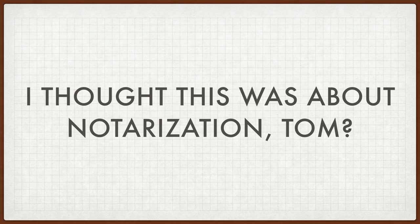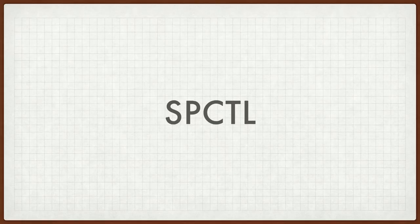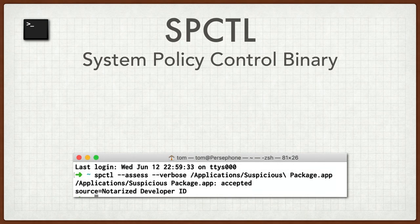But Tom, I thought this was about notarization. Understanding notarization means understanding how it's enforced by the system. Gatekeeper enforces the notarization check as part of its operations to prevent quarantined code from leaking before it is checked for integrity and trust on a granular basis. It's the next step down the garden path toward a more secure environment. So what are the tools that we have to think about here? This is the system policy control binary.